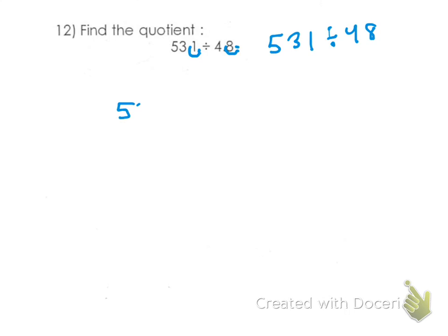So 531 is going to go on the inside, 48 is going to go on the outside. How many times does 48 go into 5? Zero times. What about 53? How many times is 48 going to go into 53? Once. So then we're going to say 1 times 48, subtract. 53 minus 48 is 5. We have 5 left over.